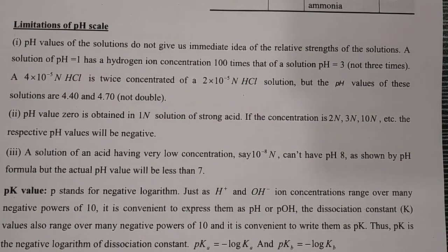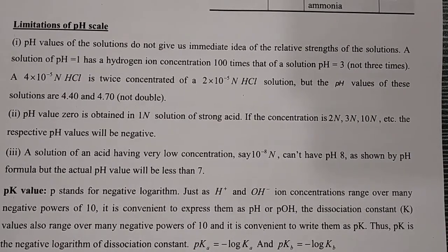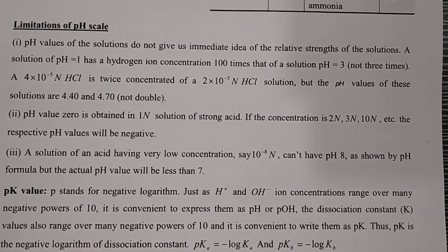To illustrate the third limitation, let's calculate the pH and pOH of a very dilute solution of HCl and NaOH, both at concentration 10⁻⁸ molar.